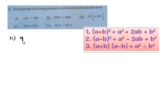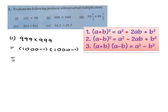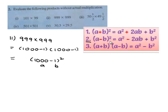Moving on to the second bit: 999 times 999. The product can be written as (1000 - 1) times (1000 - 1). Here, (1000 - 1) is multiplied by itself twice, so it can be written in exponent form as (1000 - 1)². It is in the form of (a - b)². From the second identity, (a - b)² = a² - 2ab + b².